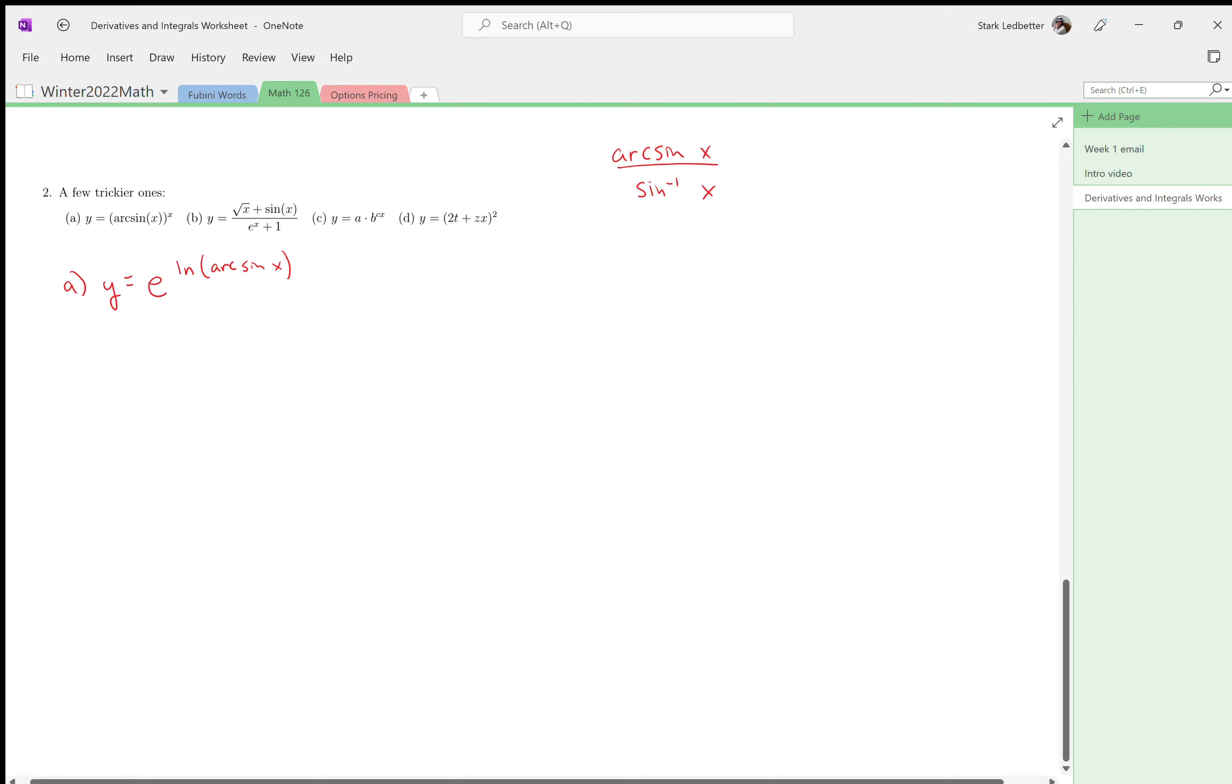Anyways, arc sine x is e to the natural log arc sine x, and then we're raised all to the x. But the thing this is going to make me go back on, because this part's fine, is memorizing the derivative of arc sine x.